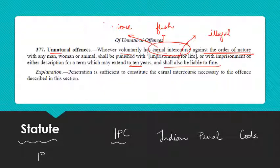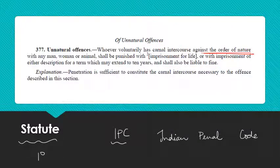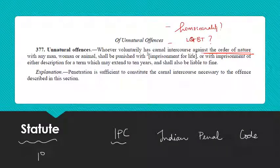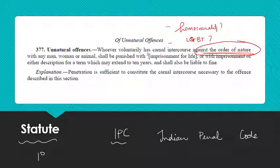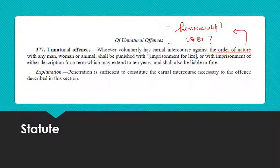What you can see from this is that the illegal thing is 'carnal intercourse' — intercourse relating to flesh, which deals with sexual intercourse. When someone has sexual intercourse that goes against the order of nature, that is when it becomes an offence. I want you to notice something: do you see any mention of homosexuality, gay, lesbian, or LGBT? You don't see any of this. That means the provision has been interpreted — it uses the phrase 'against the order of nature.'